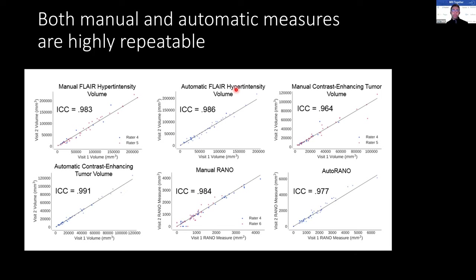To test the repeatability of the RANO and volume measures, we used a test-retest study where patients were imaged prior to treatment two to five days apart — meaning the tumor should not have appreciably changed between those two scans, so we should expect the exact same RANO and volume measures. For the manual metrics, we had two neuroradiologists work on this to test inter-rater variability. The ICCs are generally quite good for both manual and automatic RANO, meaning our automatic algorithms are at human-level performance.